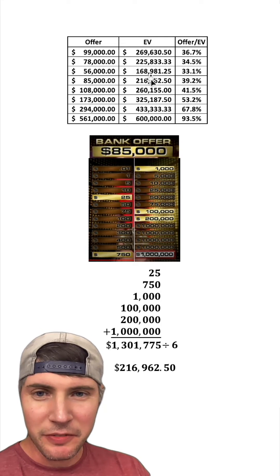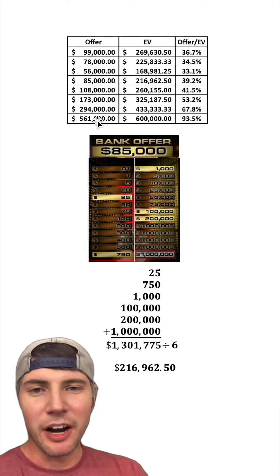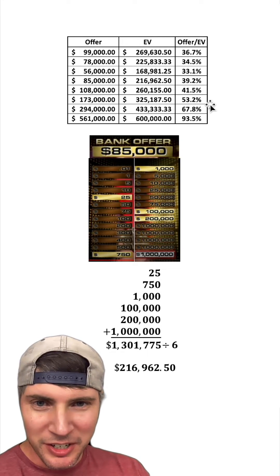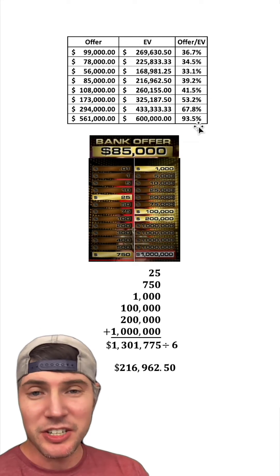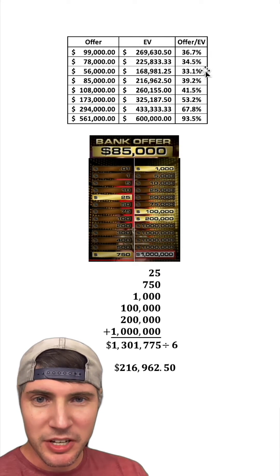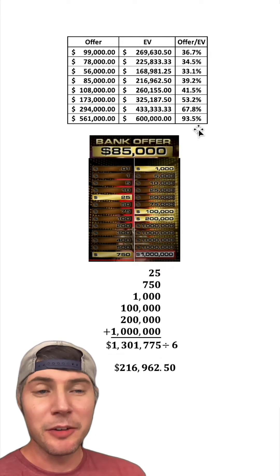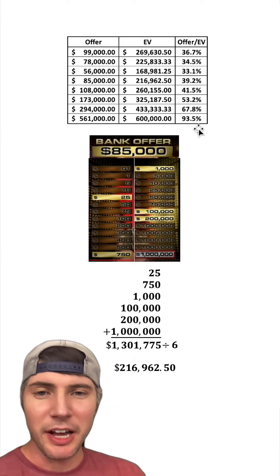You can see the expected value started making its way up and so did the offers, but what's funny is the percentages even went up as well. We started at 30%, made it up to 40%, 50%, 60%, and now up to 93% for the last one.